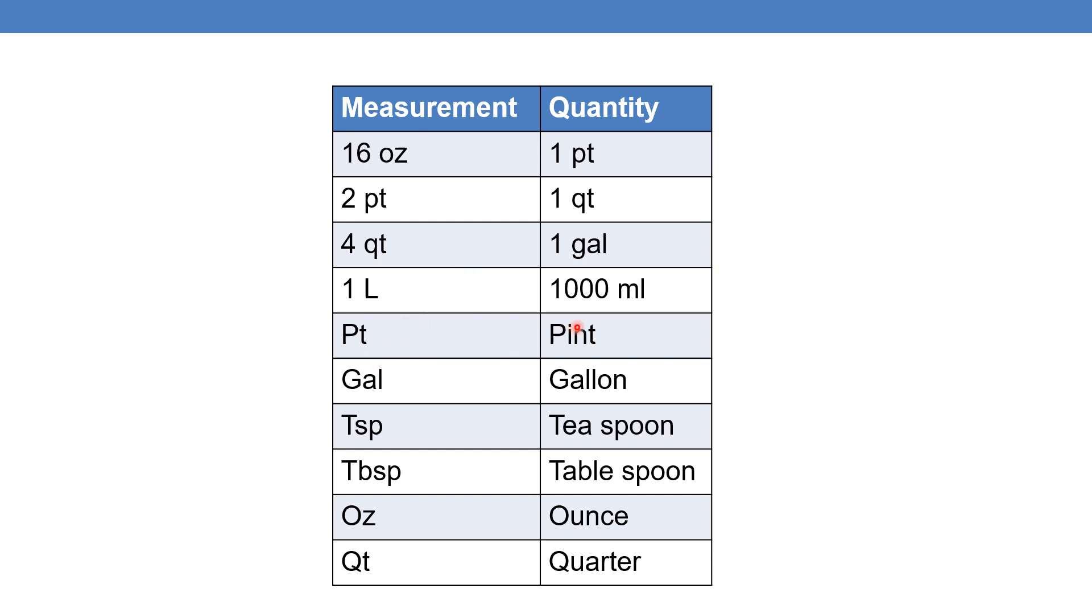The symbols: Pt means pint, Gal means gallon, Tsp means teaspoon, Tbsp means tablespoon, Oz means ounce, Qt means quarter.